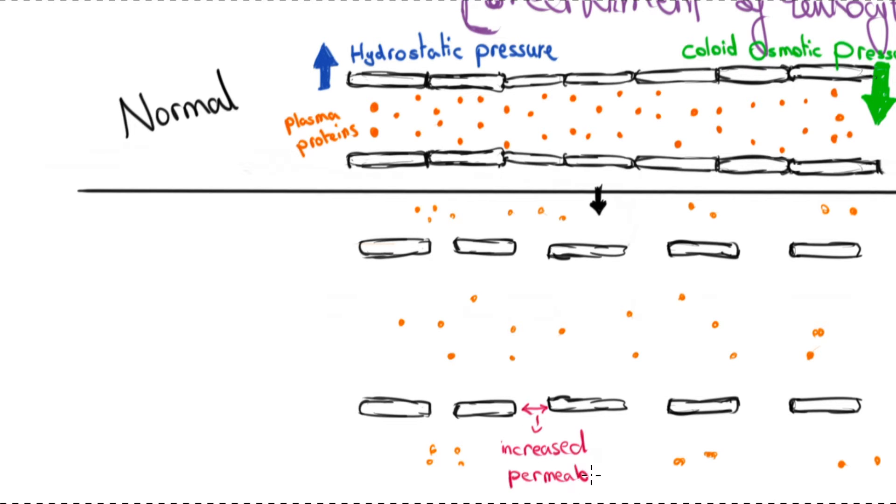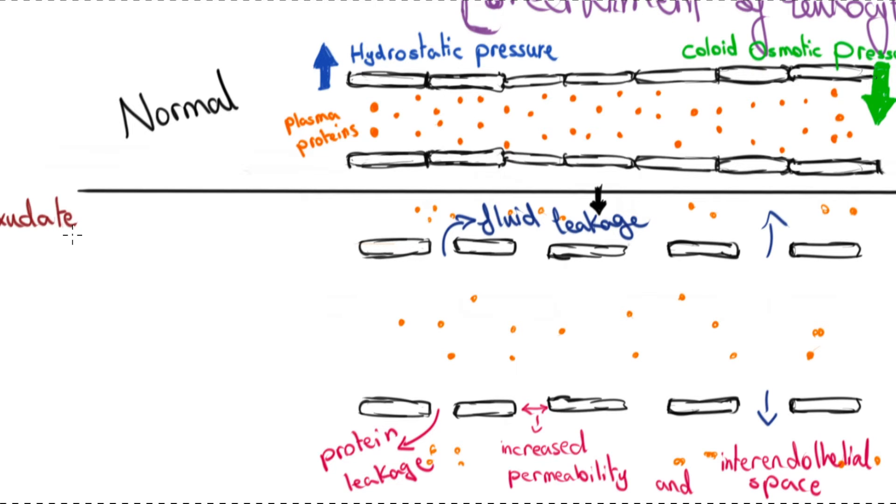Increased permeability and inter-endothelial space results in fluid and protein leakage from the vasculature. After having exited the vessel, this fluid, which is high in protein content and cellular debris, would be called an exudate. Exudate is what causes edema or swelling in inflammation.